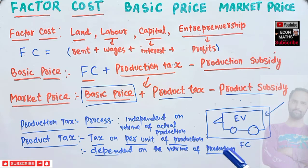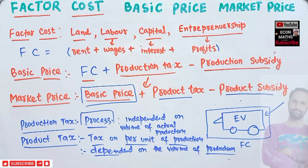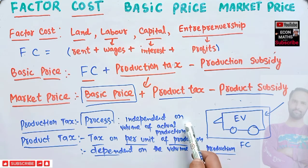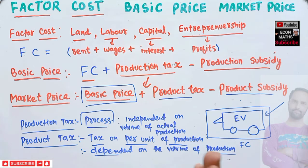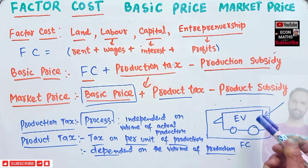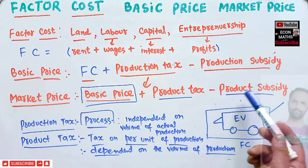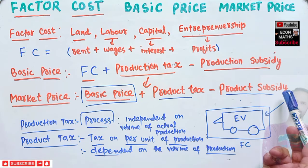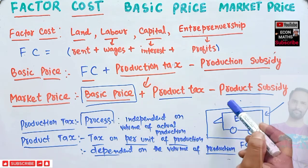To clarify: production tax is the tax on the process of production — like registration fees and license costs — and is independent of how many units you produce. Product tax is the tax per unit of production and changes with volume. Product subsidy is similarly on a per-unit basis. So market price equals basic price plus product tax minus product subsidy.